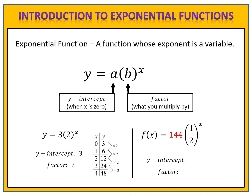Let's compare answers. We begin by identifying the y-intercept, which is the a value: 144. We then identify the factor, which is the b value: one-half. So the factor is one-half. To create the input and output table, we start with the y-intercept, 144. The factor is one-half, so we're multiplying by one-half to get the next outputs. Remember, multiplying by one-half is the same as dividing by 2. When we deal with exponential functions, we're always talking about multiplication, so we'll never say dividing by 2 — instead we would say multiplying by one-half.